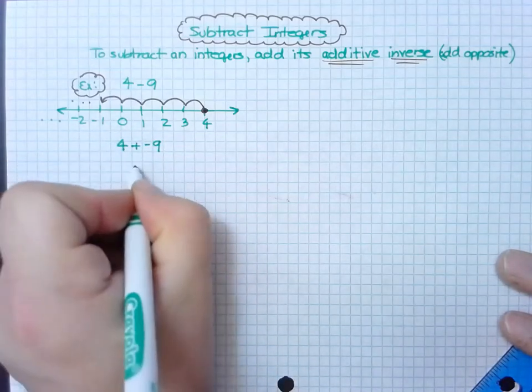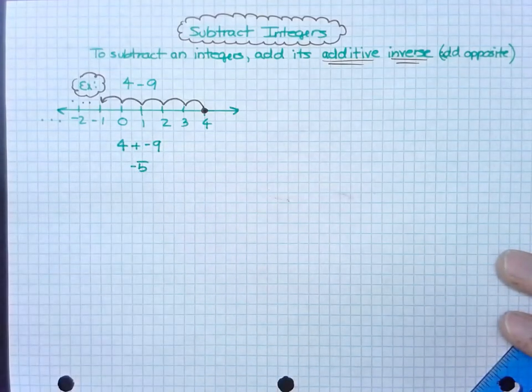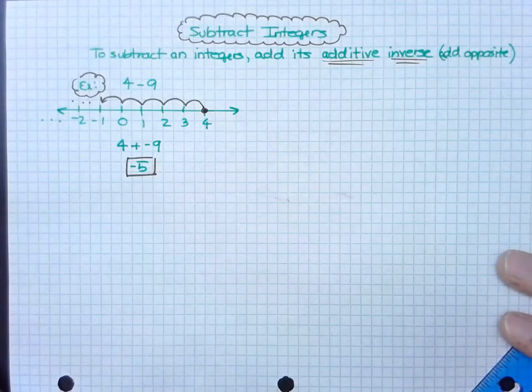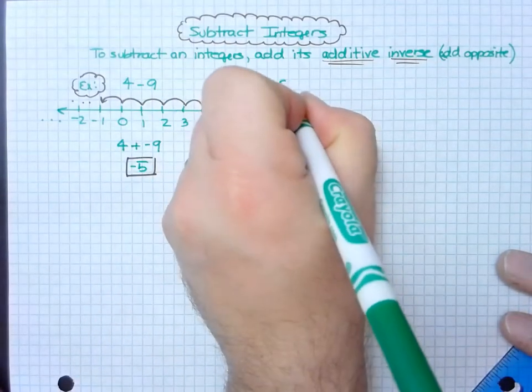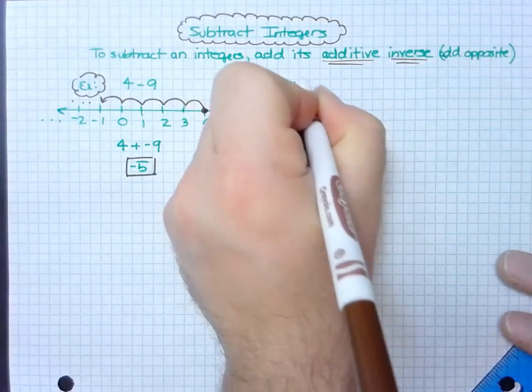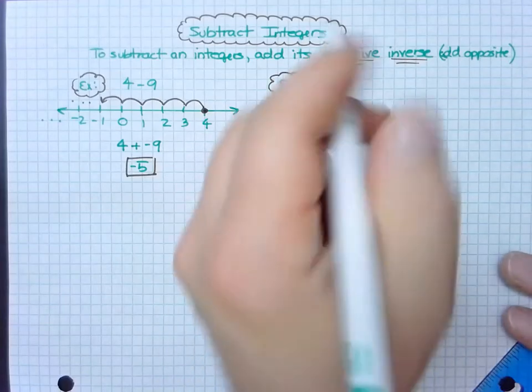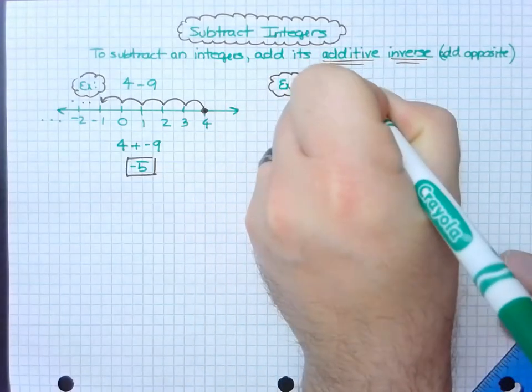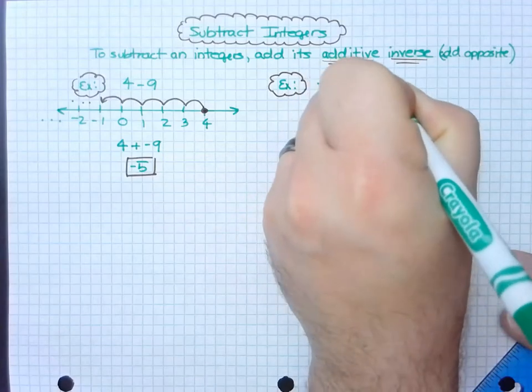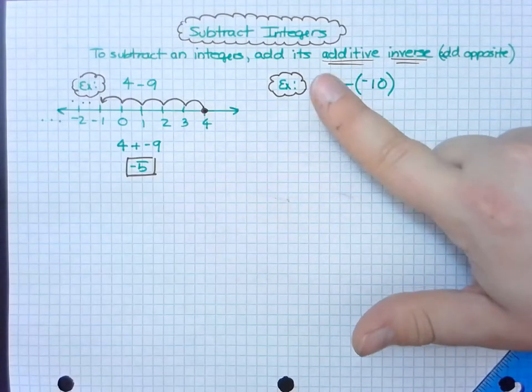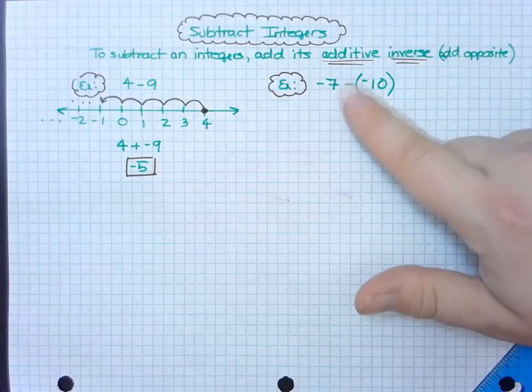There's one more example I'd like to give for this lesson, and it's what to do when I have a minus negative number. So this is saying minus a negative 7 minus a negative 10.